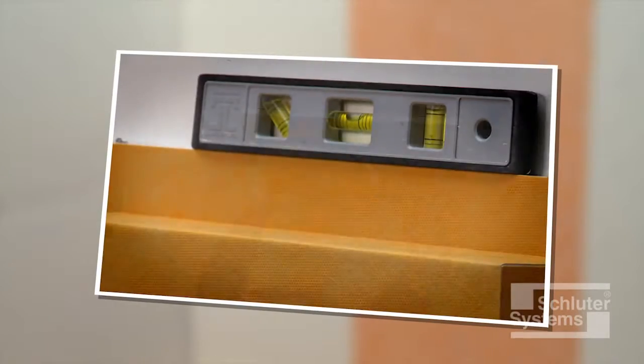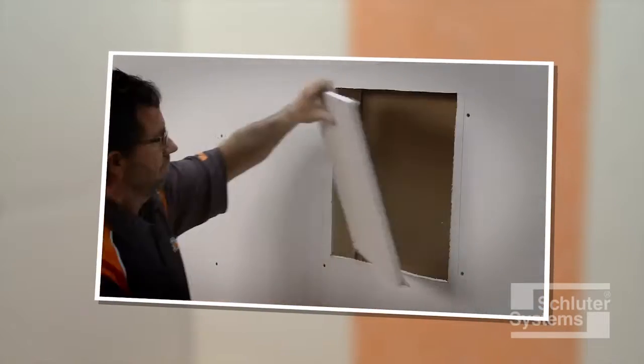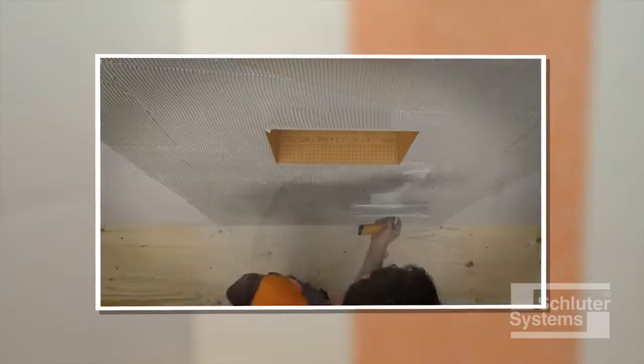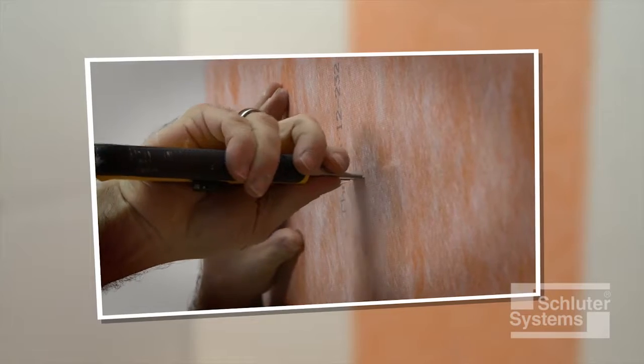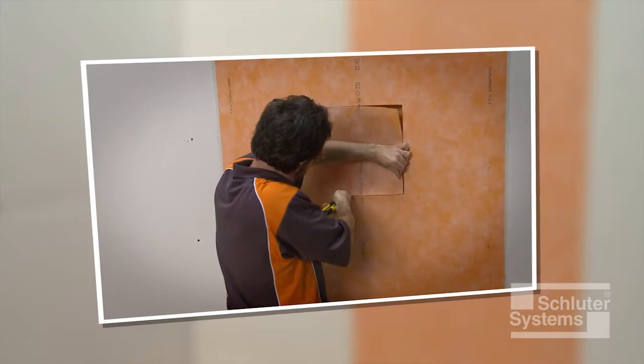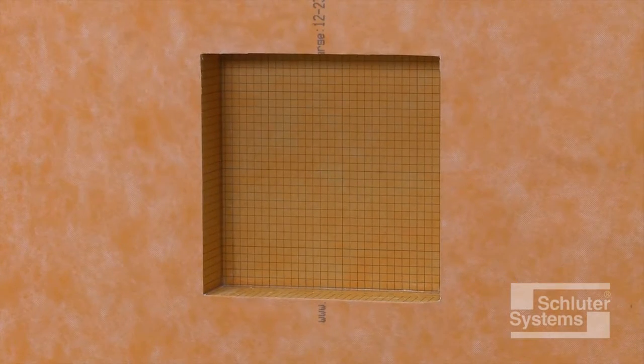Schluter KERDI Board SN is a prefabricated shower niche made of Schluter KERDI Board that can be easily installed in shower or bathtub surround applications. Here's how to install one in conjunction with the Schluter KERDI waterproofing membrane over solid backing such as gypsum board on wall framing.